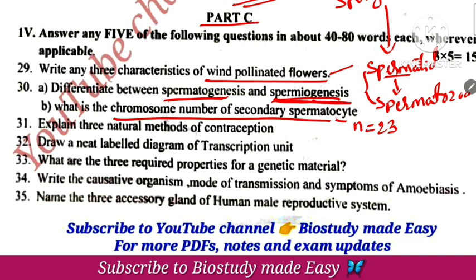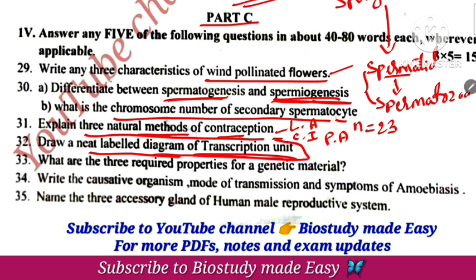Chromosome number in secondary spermatocyte is haploid, that is 23 chromosomes. Primary spermatocyte has 46 chromosomes because it is diploid. Three natural methods of contraception — very important: lactational amenorrhea, coitus interruptus, and periodic abstinence.